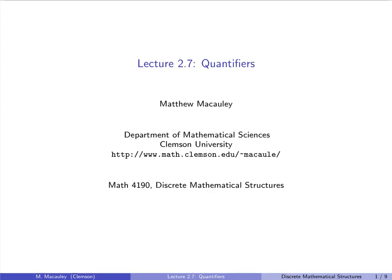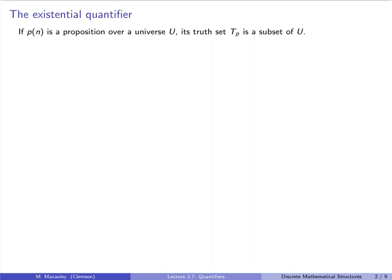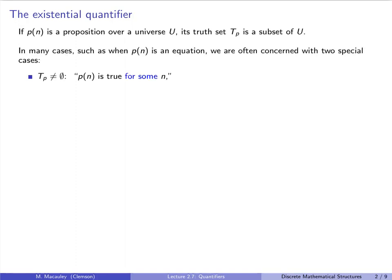Welcome to lecture 2.7, Quantifiers. To motivate this, suppose P is a proposition that depends on N, which comes from a universe U. The truth set, which is the set of all values that make P true, is a subset of the universe. In many cases, especially when P is an equation, we are often concerned with two special cases.